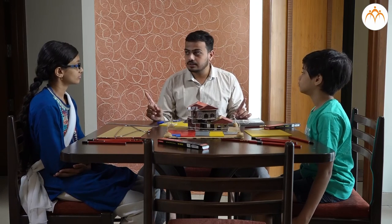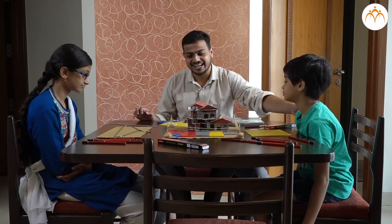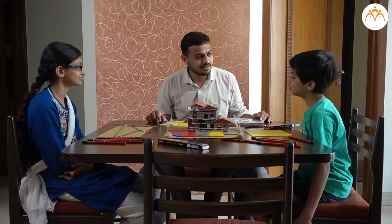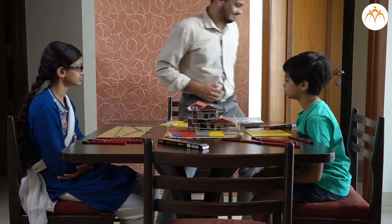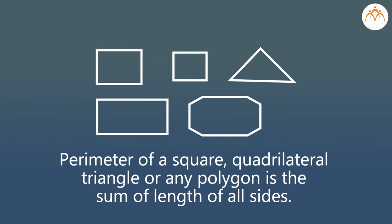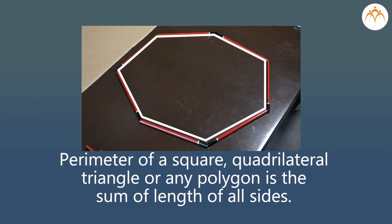I think we should stop here — I have to go to office. But you are going to finish your homework, right? We will finish this tomorrow. What did we learn? The perimeter of a square, quadrilateral, triangle, or any polygon is the sum of the length of all sides.